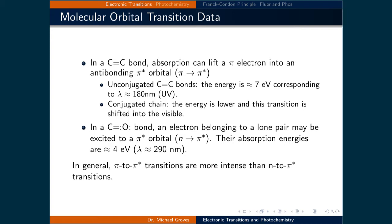For the carbon-carbon double bond, the energy of the transition is about 7 electron volts, which corresponds to about 180 nanometers. This is in the ultraviolet part of the spectrum. If there is a conjugate chain, this energy of the transition drops into the visible region of the spectrum.